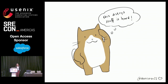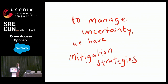So you might be scratching your head at this point saying: distributed systems are really hard. There must be coping strategies, there must be ways to make life better. And there are — there are ways that we manage uncertainty, we have a whole set of mitigation strategies.